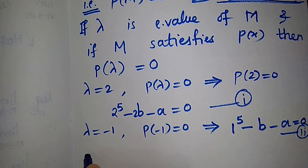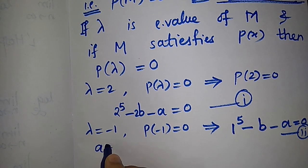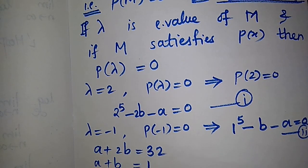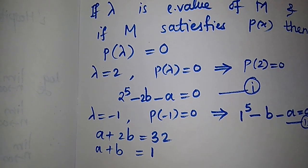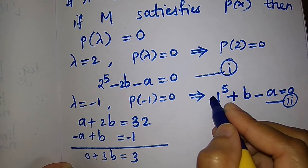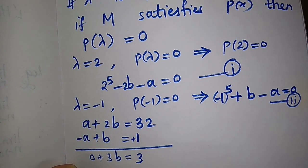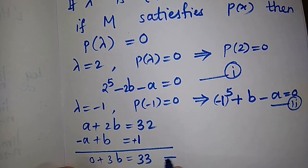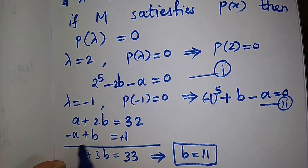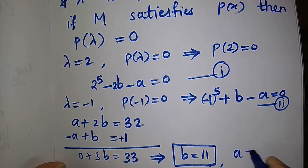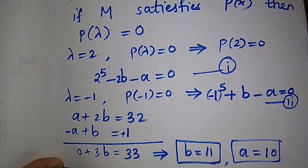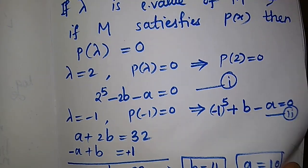These two equations are: a + 2b = 32 and a + b = 1 (correcting the sign: -1 + b - a = 0 gives a - b = -1, so a + b = 1, with b = 11 and checking — actually: a + 2b = 32, a - b = -1 gives b = 11, a = -9 ... let us follow the video). The video gives b = 11 and a = 10 as the final values.